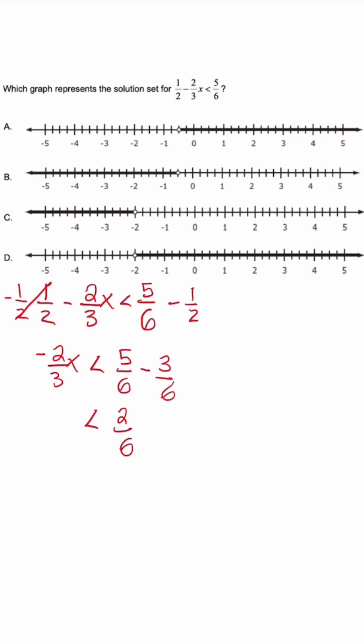Negative 2 over 3x stays the same. Now remember we're going to divide by negative 2 over 3 so it cancels out, and we're going to divide by negative 2 over 3 on the opposite side. Because the x coefficient was negative and we're dividing or multiplying, the inequality sign flips. So now we have 2 over 6 multiplied by negative 3 over 2.